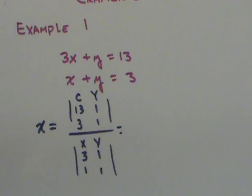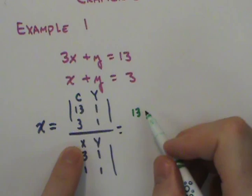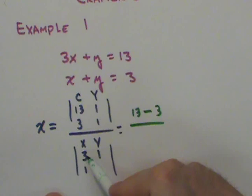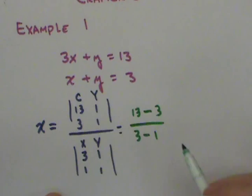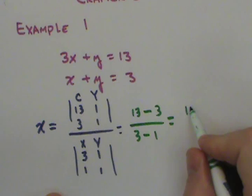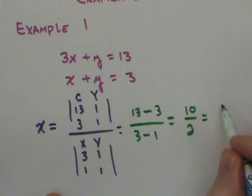Now as I do my cross products, I'll take 13 times 1 minus 3 times 1 over 3 times 1 minus, minus is part of the formula, 1 times 1. Now I simplify what I have, 13 minus 3 is 10, and 3 minus 1 is 2. This reduces to 5.